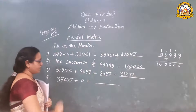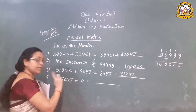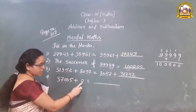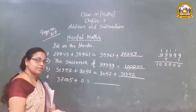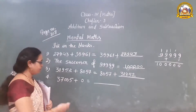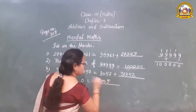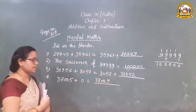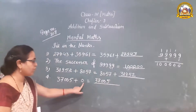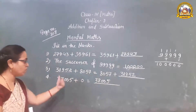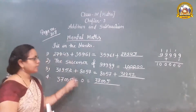Question number 4: when we add 0 to any number, we get the number itself. This is the property. So the same number is the answer. 37,005 plus 0 — when we add 0 to a number, we get the number itself. Is that clear?